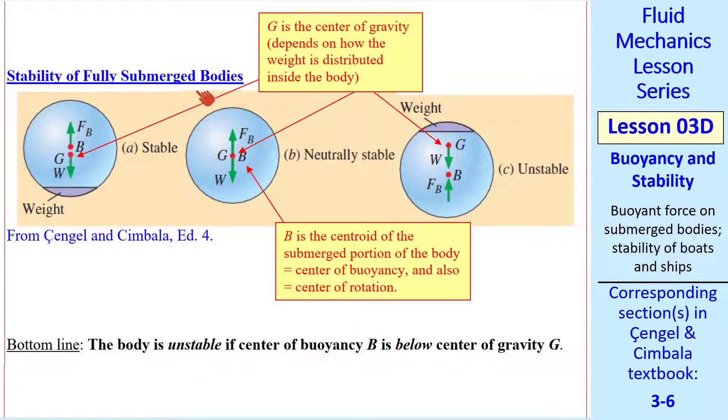Let's look first at fully submerged bodies. As we defined previously, we have a center of gravity, G, and a center of buoyancy, B, which is also the centroid of the submerged portion of the body. G depends on how the weight is distributed inside the body. For example, if there's a weight on the bottom of this sphere, G is lower than the middle. And if there's a weight at the top, G will be higher than the center. This case is stable because G is below B. This case is neutrally stable.